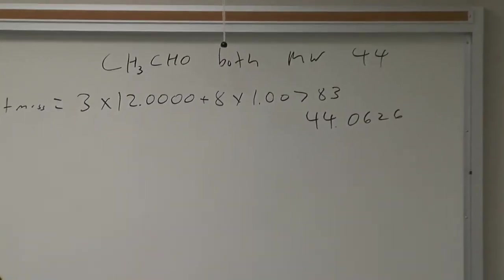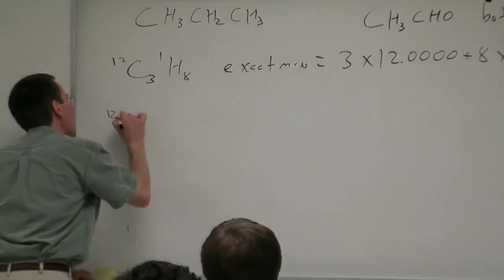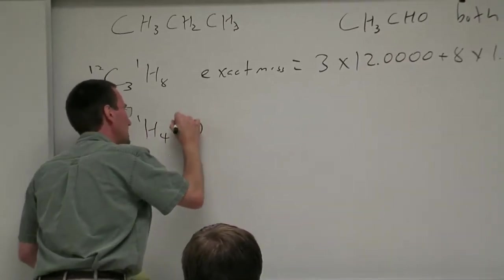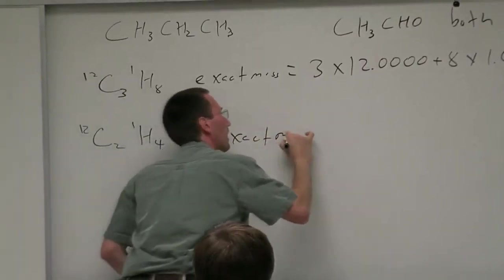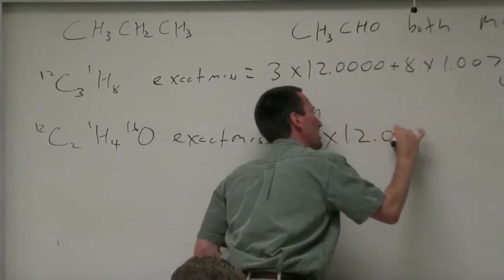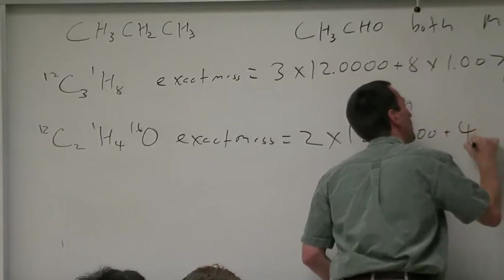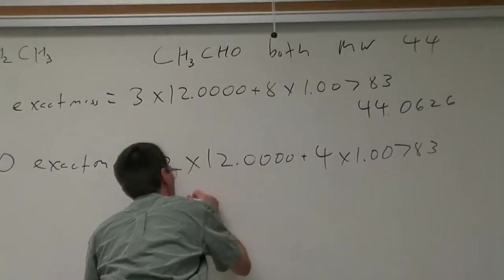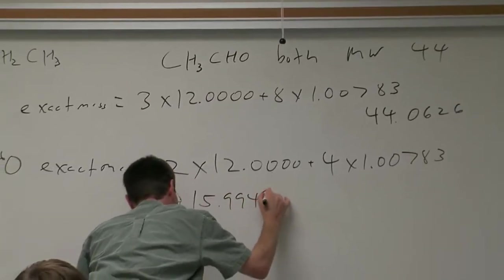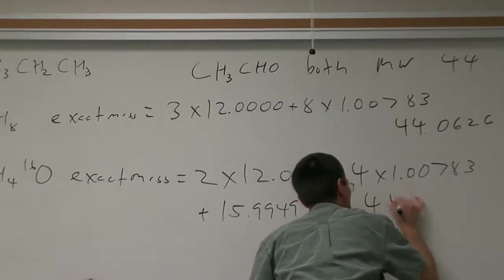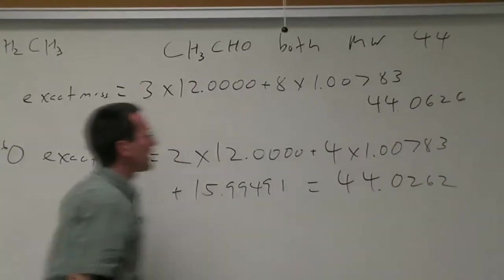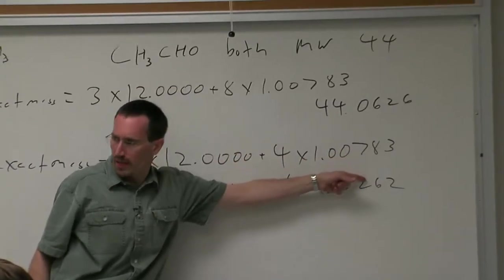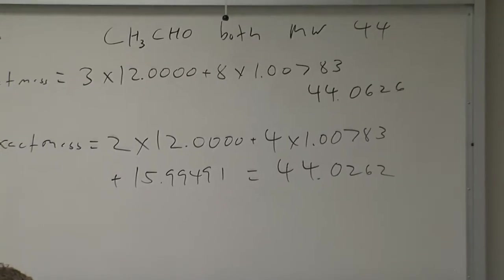If we compare our propane to acetaldehyde C12, 2, H1, 4, O16, the exact mass equals 2 times 12.0000 plus 4 times 1.00783 plus 15.99491, which equals 44.0262. The point is that there is a significant difference at the hundredths place in mass between the two molecules. That difference is 36.4 millimass units, which is a lot for high resolution mass spectrometry.